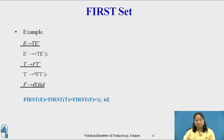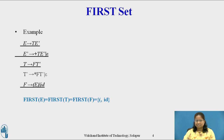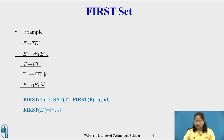Hence First(E) = First(T) = First(F) = { '(', id }. To compute First(E'), consider the production E' derives + T E' or epsilon. First(E') = First(+ T E') ∪ First(epsilon). First(+ T E') = { + } since + is a terminal, and First(epsilon) = epsilon by Rule 2. So First(E') = { +, epsilon }.